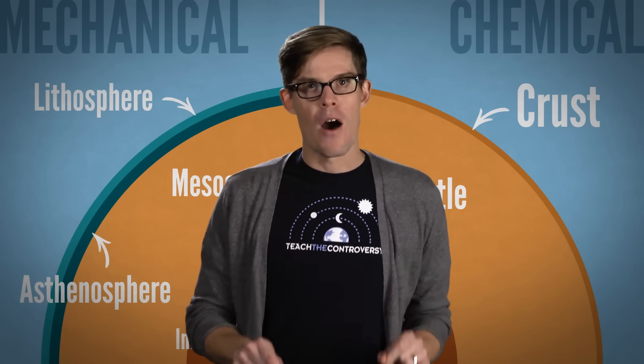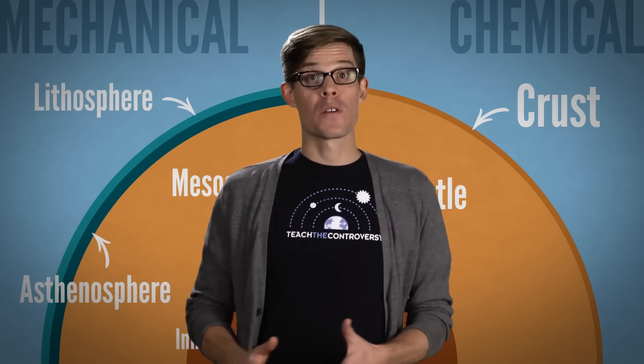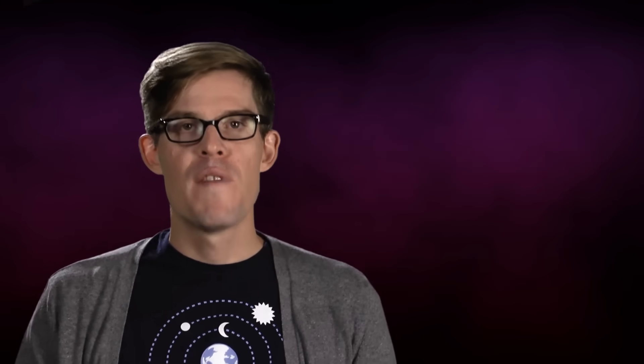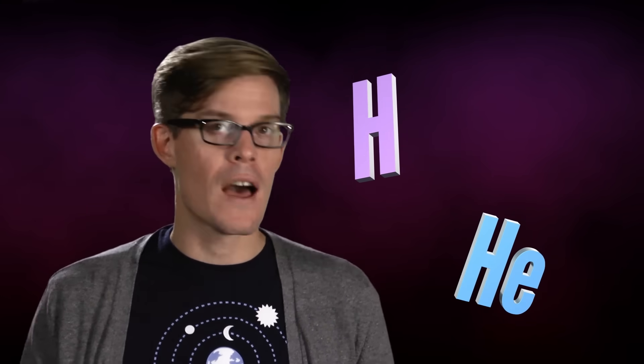So that's how it is now. But to really understand why the Earth is organized the way it is, we need to go back to before our planet even existed. In the very young universe, hydrogen and helium were pretty much the only elements around.